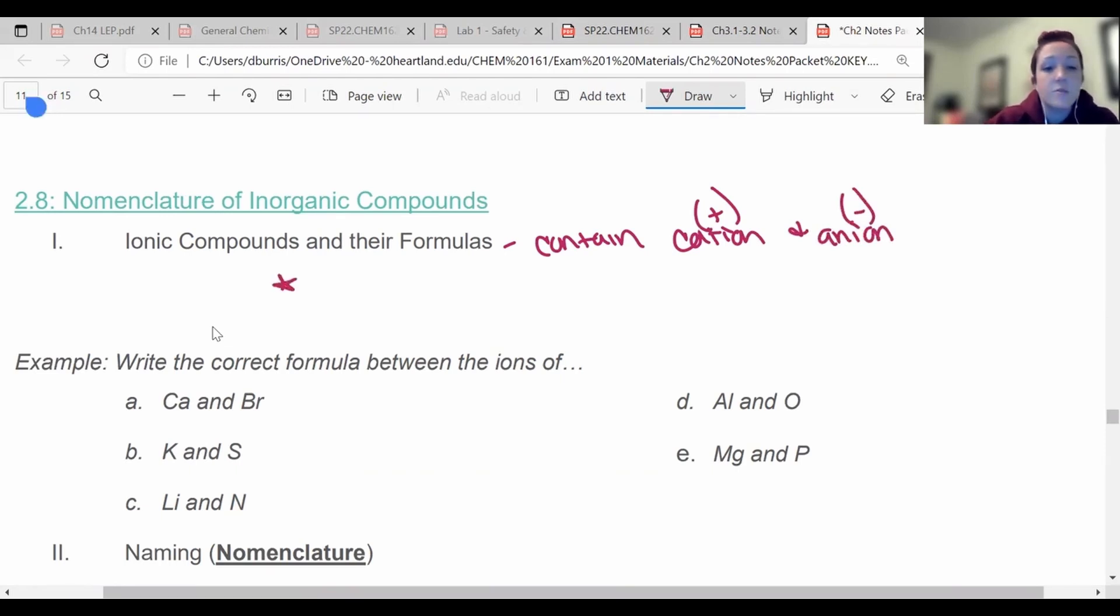Their formulas always have to be empirical, must be empirical. What does that mean? That just means it is reduced as much as possible. So like if it's Na2Cl2, both of those subscripts are divisible by two. It should actually be NaCl. So these should always be reduced.